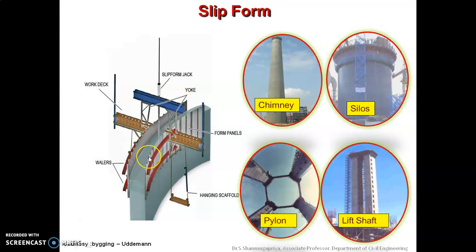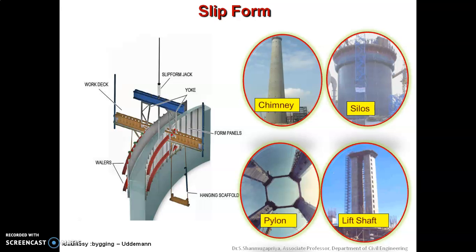This slip form construction technology was used to construct the 345-meter high concrete shaft of the CN Tower in Toronto in 1974. In India, the technique was used around 1988 to construct the 235-meter high TV tower in Pitampura, New Delhi. Slip form can be applied to chimneys, silos, pylons, lift shafts, water towers, telecommunication towers, bridge piers, stairs, and elevated shaft cores.